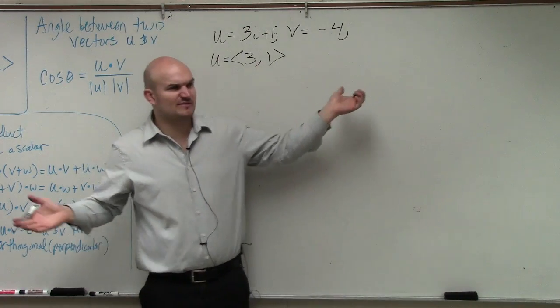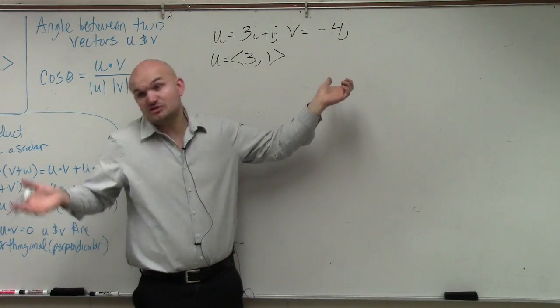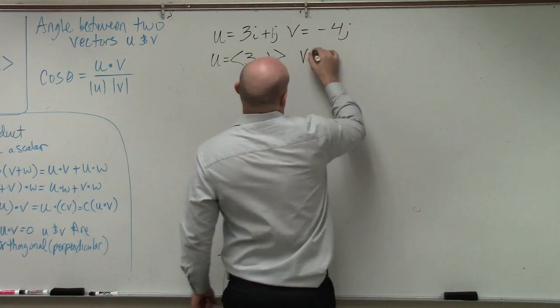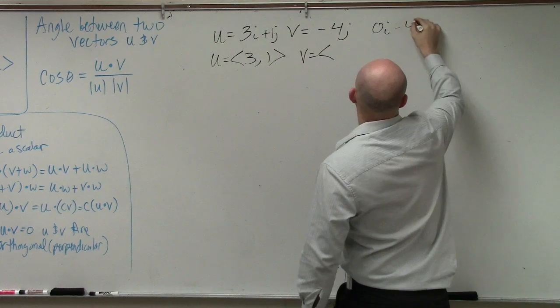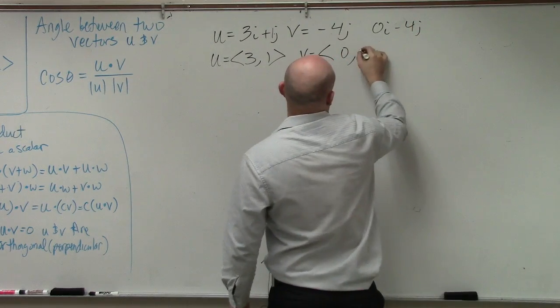For v, do I have anything in front of my i? Do I have anything for i? So it's 0, right? Because really, it's 0i minus 4j. So it's 0 comma negative 4.